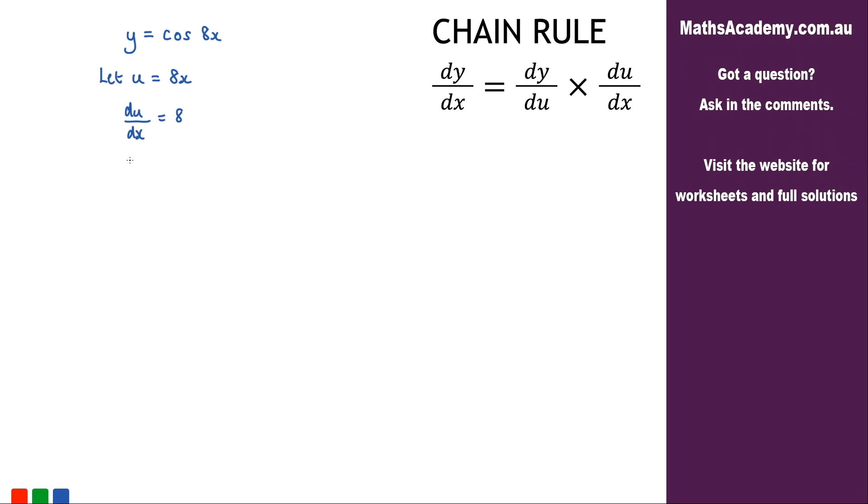We'll put that substitution in. We've got y equals cosine of u. And differentiate that. We get dy by du is equal to negative sine u. So when you differentiate cosine, you get negative sine.